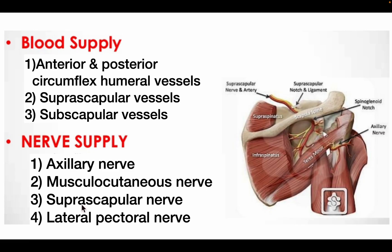Blood supply of the shoulder joint is provided by the anterior and posterior circumflex humeral vessels, suprascapular vessels, and subscapular vessels. Nerve supply is by the axillary nerve, musculocutaneous nerve, suprascapular nerve, and lateral pectoral nerve.